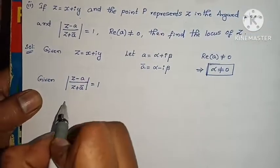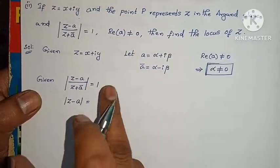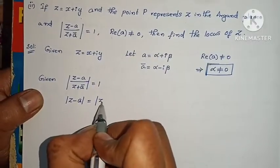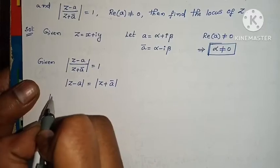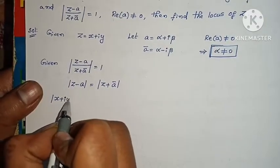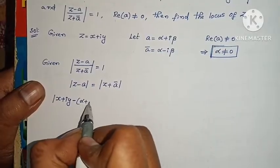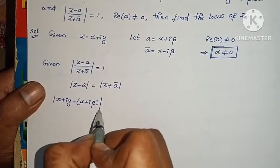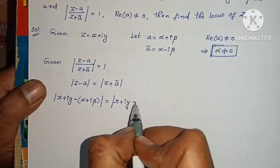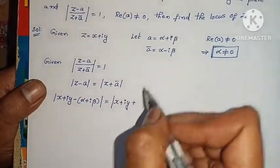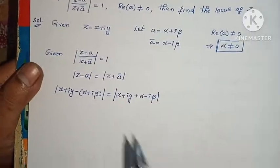Given: modulus of (Z minus a) equals modulus of (Z plus ā). Substituting Z = X plus iY, a = alpha plus i·beta, and ā = alpha minus i·beta: modulus of (X plus iY minus alpha minus i·beta) equals modulus of (X plus iY plus alpha minus i·beta).